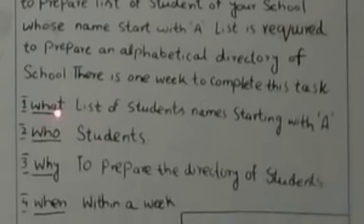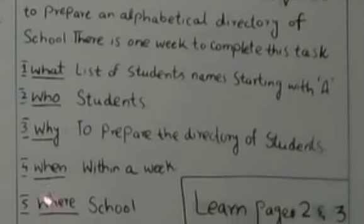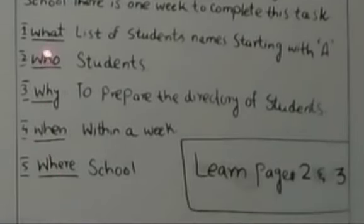Number 1 is what. List of students names starting with A. Number 2 is who. Students. You have to tell the names of students whose name starts with A. Number 3 is why. To prepare the directory of students.